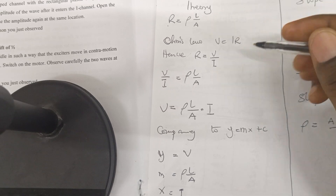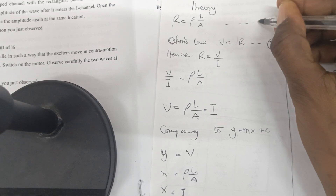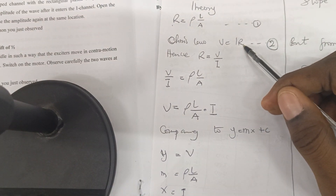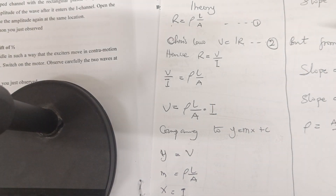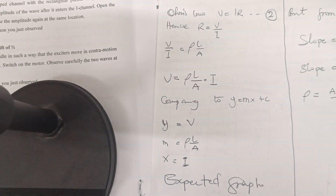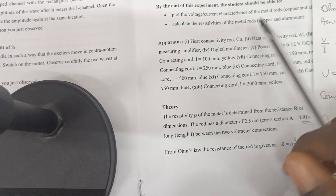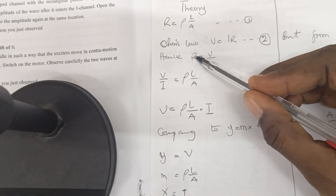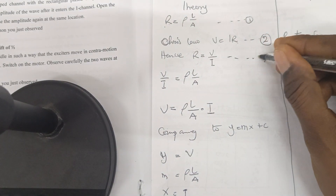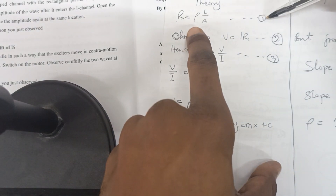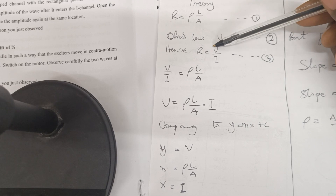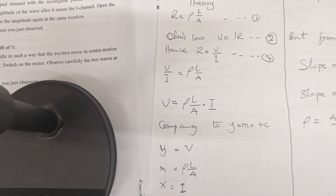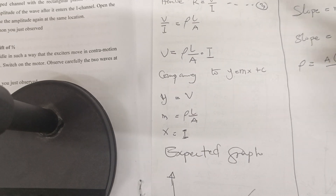If we make R the subject in equation two, V = IR, we get R = V/I. That's how to find the resistance, but we are interested in the resistivity. We also have equation one: R = ρL/A. Let's call R = V/I equation three, and insert equation three into equation one. Replacing R with V/I gives us V/I = ρL/A.